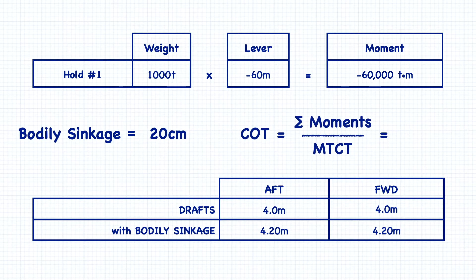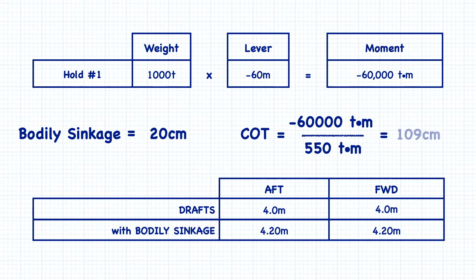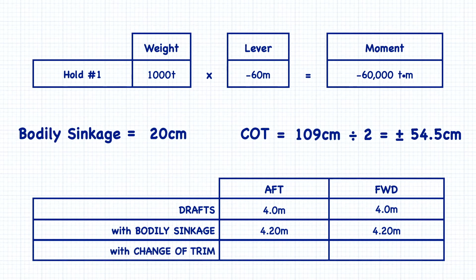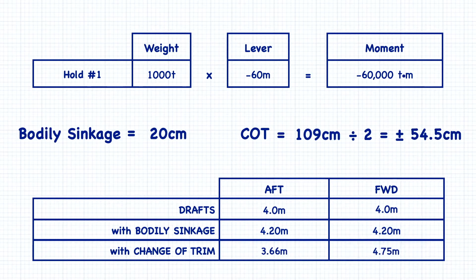The next step is to calculate the change of trim. The sum of our turning moments is negative 60,000 ton meters, and the moment to change trim was 550 ton meters, so our change of trim is going to be 109 centimeters. Remember that the change of trim needs to be split between the two drafts, so 109 centimeters divided evenly is 54.5 centimeters. If we apply our trim, we get the final drafts that result after loading our 1,000 tons of cargo.